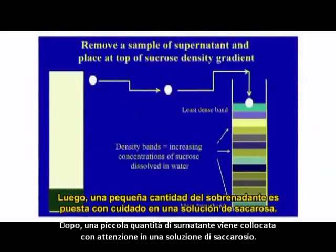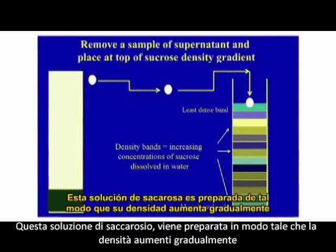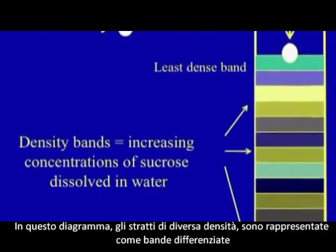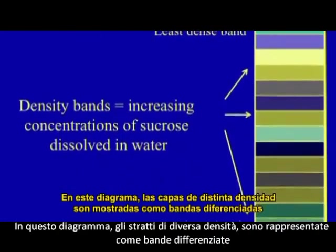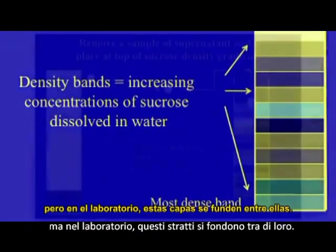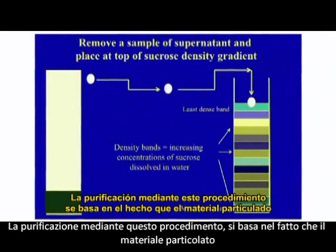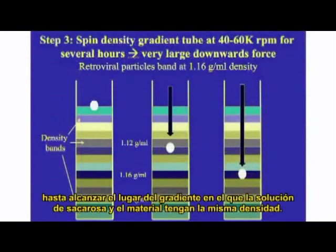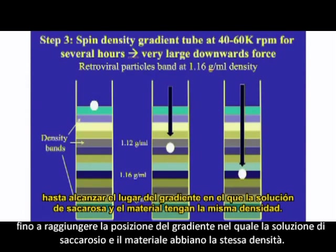Next, a small portion of the supernatant is removed and very gently placed on top of a solution of sucrose. This sucrose solution is prepared in a special way such that its density increases gradually from the top to the bottom of the tube. In the diagram the layers of different densities are shown as discrete bands, but in the real world these layers gradually merge into one another. Purification by this technique relies on the fact that particulate matter in the supernatant sample will gradually sink down through the sucrose solution until it reaches a place where the sucrose solution and the particulate matter have the same density.